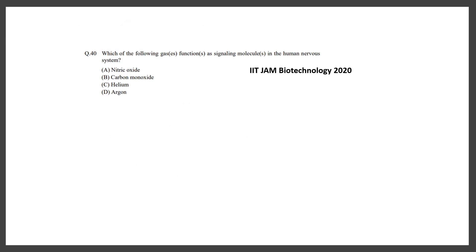In 2020 they asked: which of the following gases function as a signaling molecule in the human nervous system? Options were nitric oxide, carbon monoxide, helium, argon. The correct answers are nitric oxide and carbon monoxide.